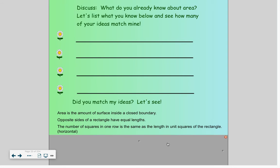The number of squares in one row is the same as the length in unit squares of the rectangle going horizontally. The number of rows in the rectangle is same as the width in unit squares of the rectangle.